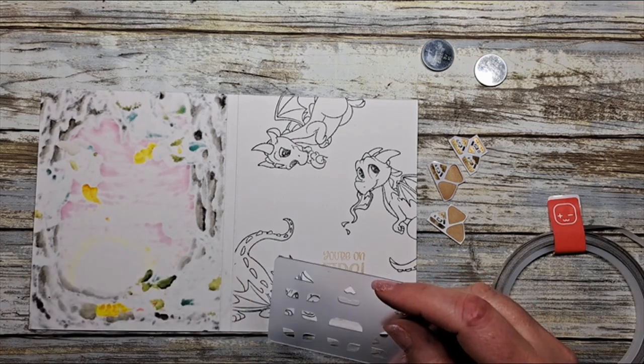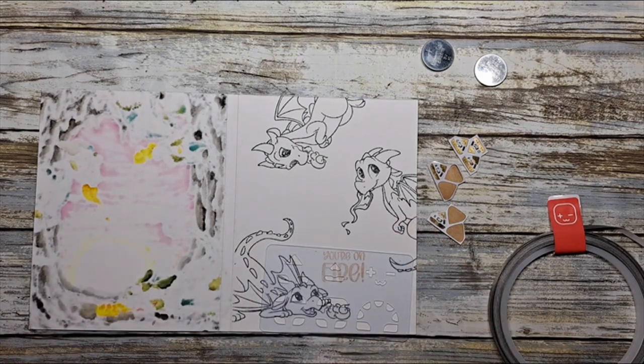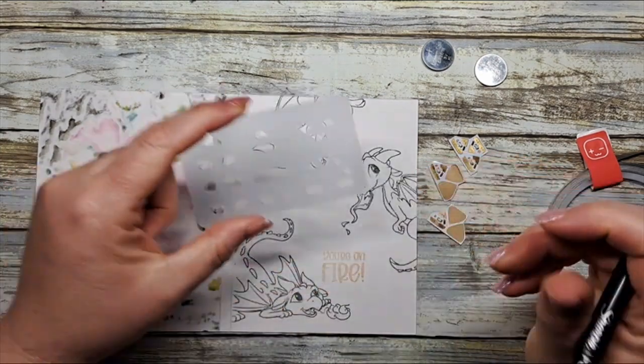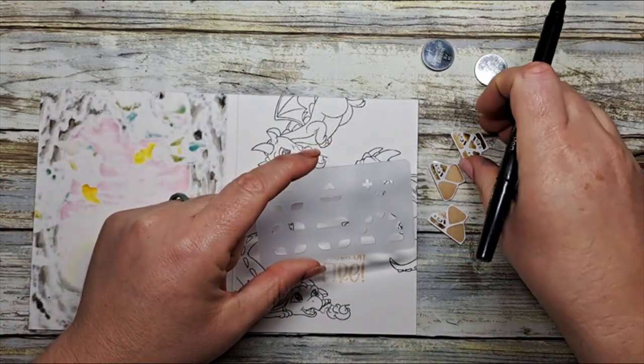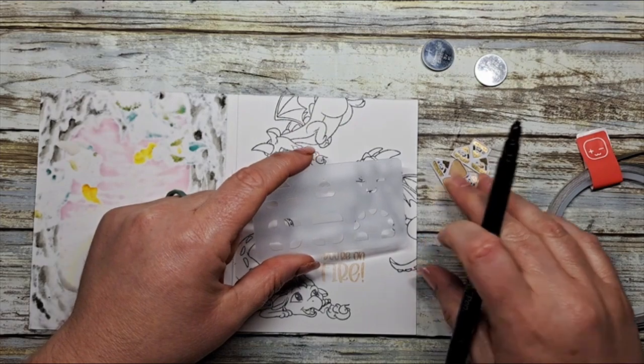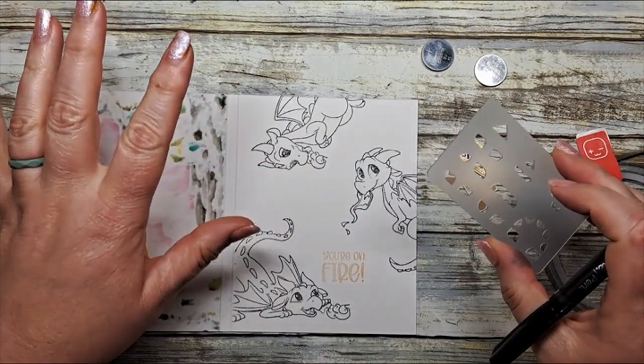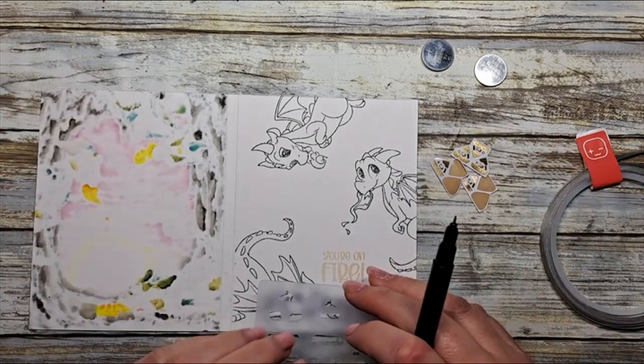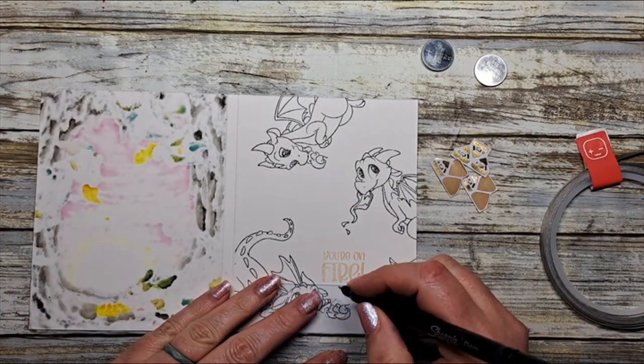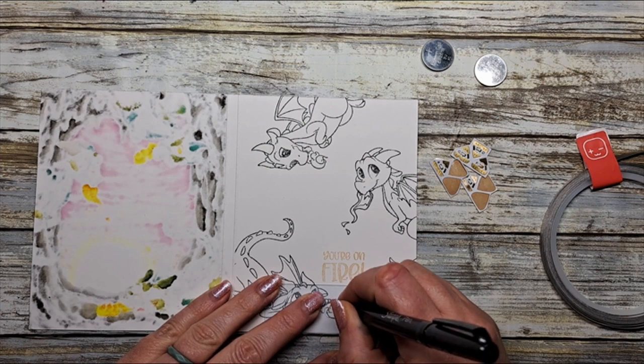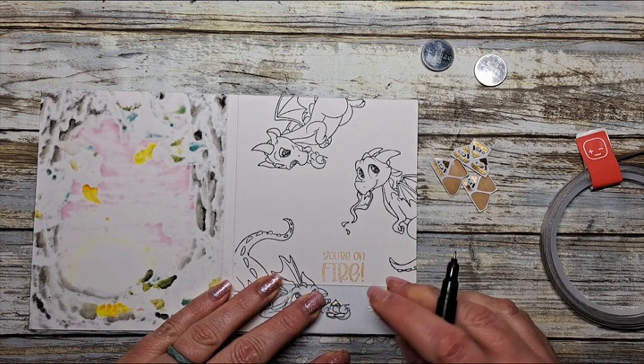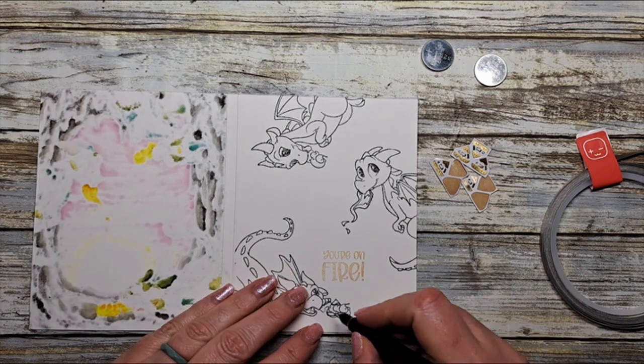Now we need to map them out and create our circuit. We're going to use our craft stencil today, using the same size triangle as our LED light stickers. For my card today we are going to light up the little blast of fire.